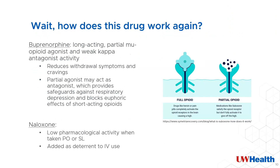If you're like me and have limited experience with this medication, you'll probably be wondering how it works. Buprenorphine is a long-acting partial mu-opioid agonist, which means it works on the same receptors as other opioids, so it reduces cravings and symptoms of withdrawal. Since it is only a partial agonist, it does not produce a high or increase the risk of respiratory depression. The naloxone piece has very little pharmacological activity when taken orally or sublingually, and is thought to be a deterrent for IV use.